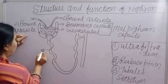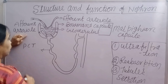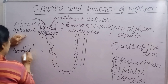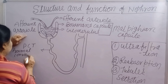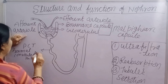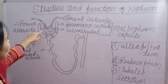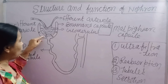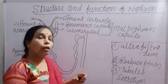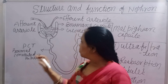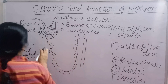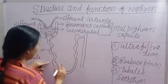The tubular part of the nephron begins with the PCT — proximal convoluted tubule. Proximal means it is near Bowman's capsule, and convoluted means it is twisted or coiled. यह मुड़ा-मुड़ा हुआ है इसलिए इसको convoluted कहेंगे। After that there is the Loop of Henle, and then the collecting duct.